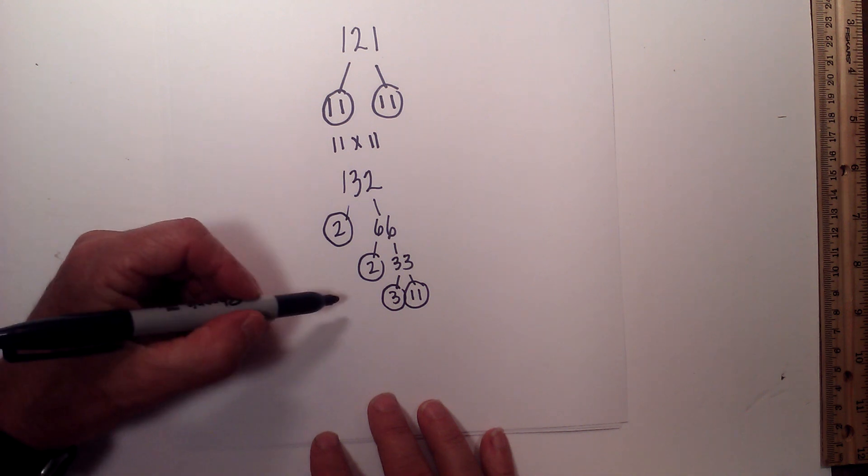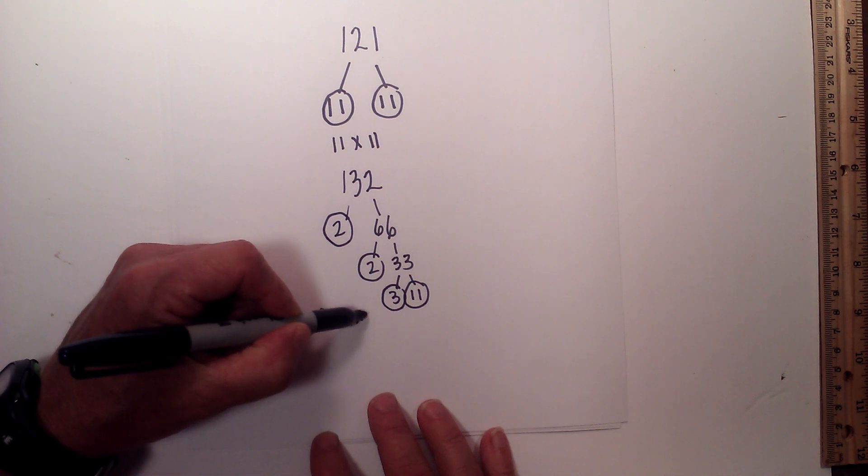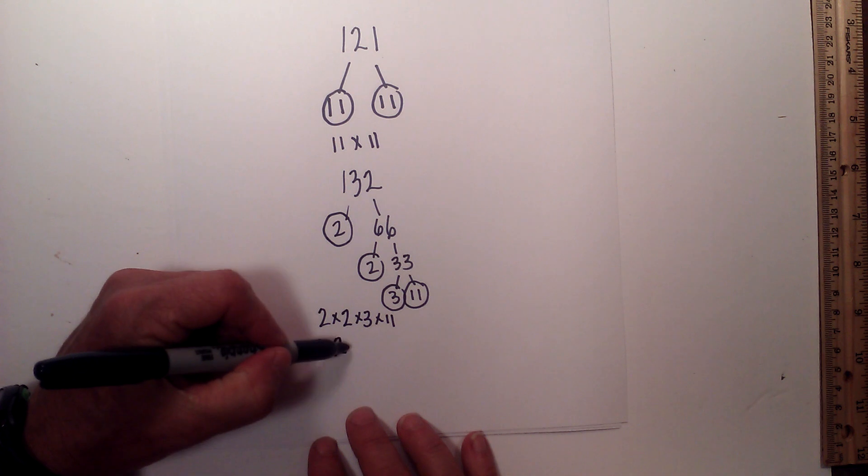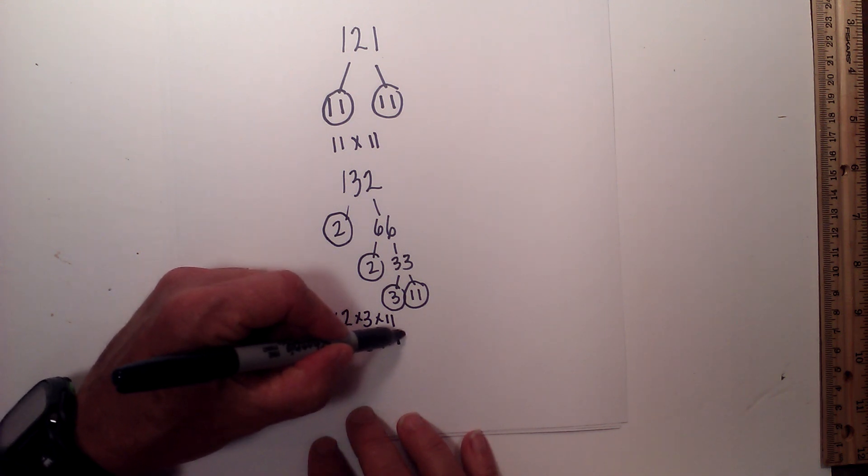So the prime factorization of 132 is 2 times 2 times 3 times 11. Or you can write it as 2 squared times 3 times 11.